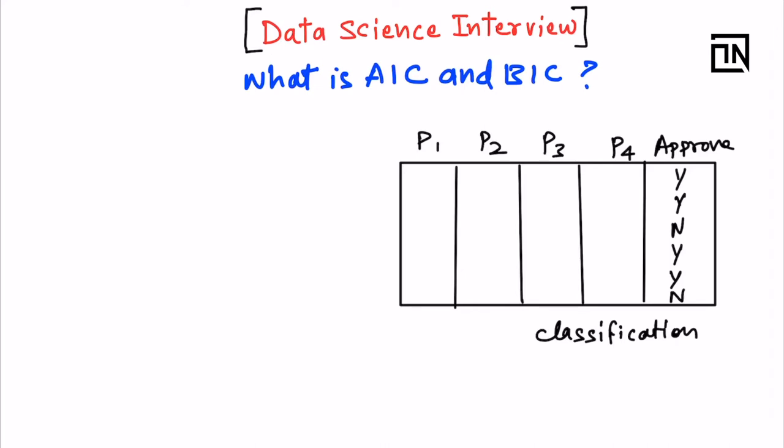First of all, let us talk about where this is used. So AIC and BIC, these are goodness of fit measures. Goodness of fit of what? Goodness of fit for classification use cases, especially the logistic regression algorithm.